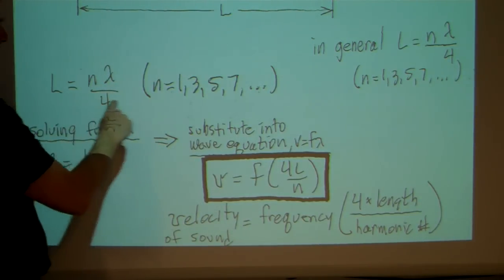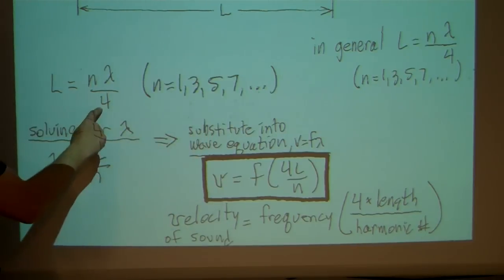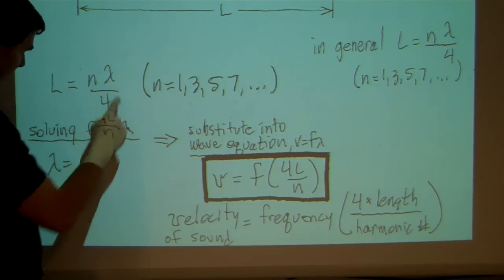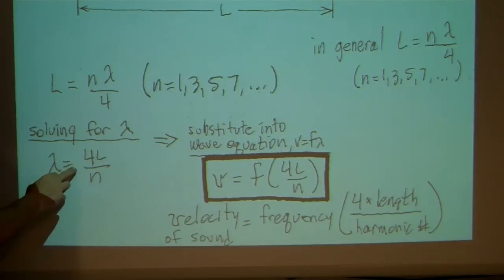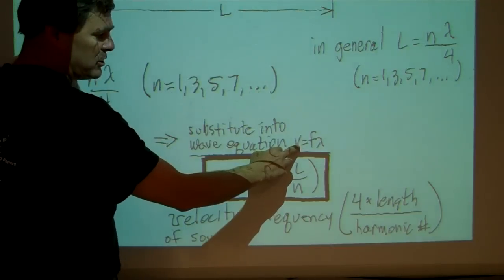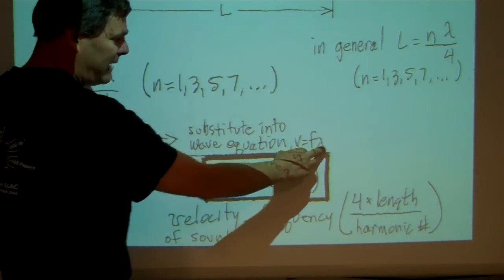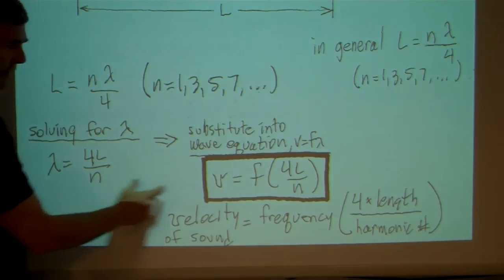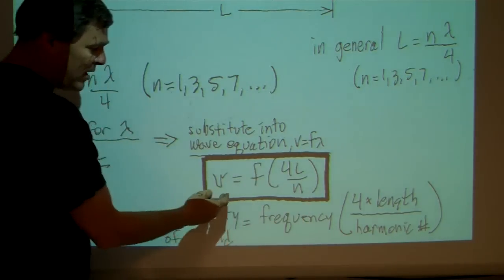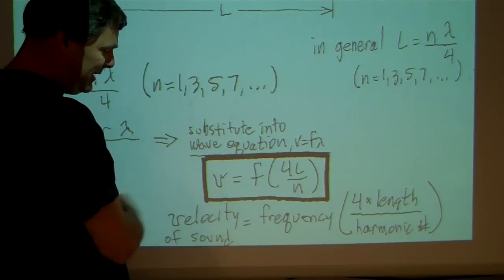So taking the equation in general, I'm going to solve this equation for lambda. Lambda will then equal four l over n. Again, n is one, three, five, seven, and so on. And then I'm going to substitute this expression for lambda into my wave equation. Velocity is equal to frequency times wavelength. Where I see the lambda, I'll substitute this in and get my equation to calculate the velocity of sound.